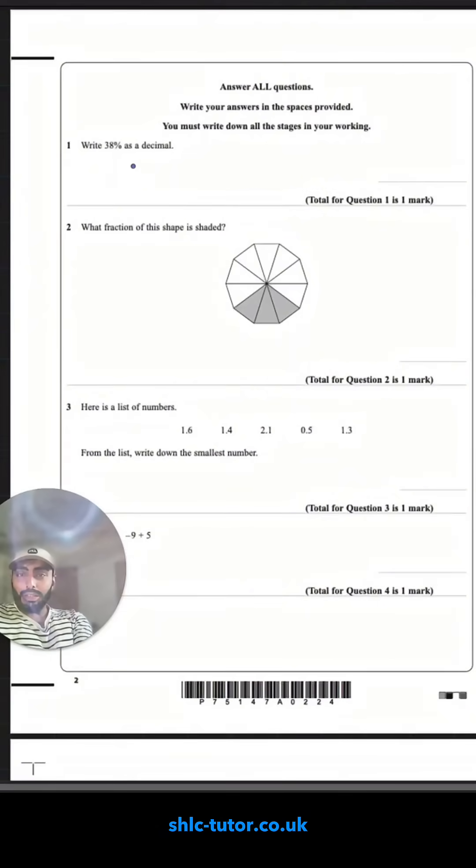Let's go through. Write 38% as a decimal. 38% is 38 out of 100. If I divide 38 by 100 and move in the decimal place two places back, it's going to be before the three, 0.38.